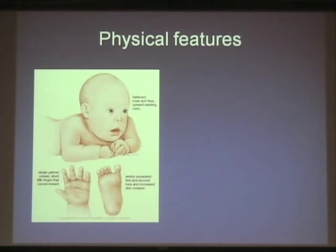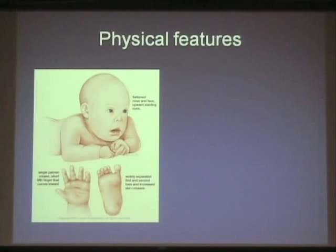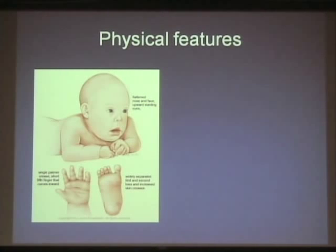Looking at the hand, one feature is a single crease across the palm. Most of us have two creases — one up here and one just below it. In Down syndrome, it's more common to have just a single crease across the hand. For those panicking as they check their own hand: 4% of the general population has this on one side, and 1% on both sides. It's not specific to Down syndrome and has no impact on hand function.